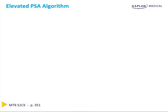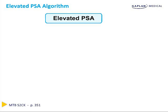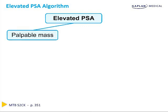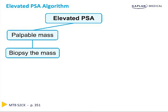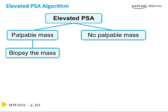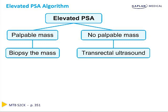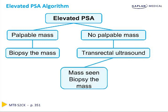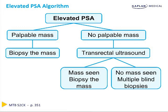When the PSA is high — greater than 4 nanograms per deciliter — the next best step is to perform a digital rectal exam. If a palpable mass or nodule is found, the next step is biopsy to determine presence of cancer and the Gleason score. If no mass is found on digital rectal exam, perform a transrectal ultrasound. If a mass is seen on ultrasound, biopsy it. If no mass is appreciated, multiple blind biopsies should be done throughout the prostate on both sides.